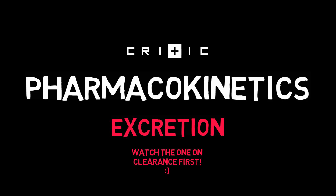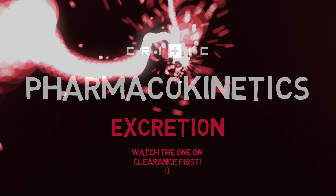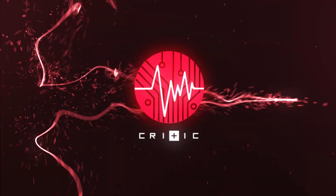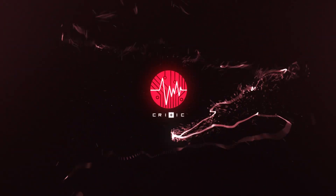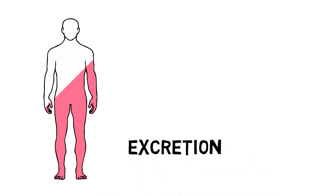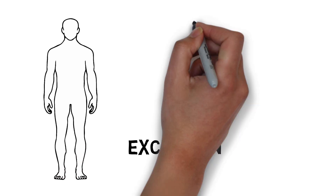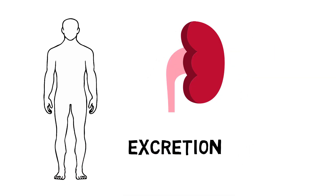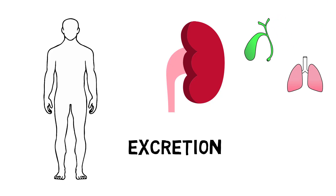Now for excretion! Excretion is the process of removing substances from our body. This is mostly done in the kidney, so we'll focus on that in this video. But excretion can also happen through bile or the lungs.